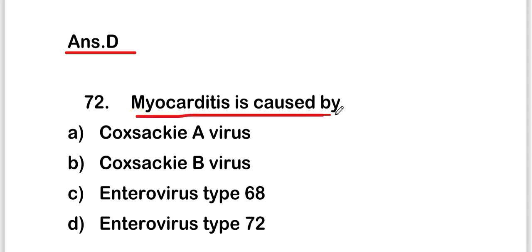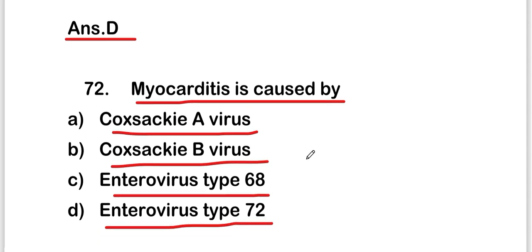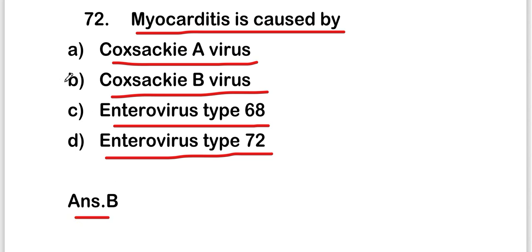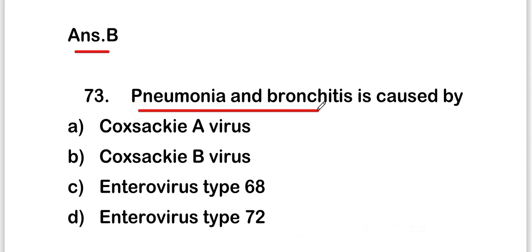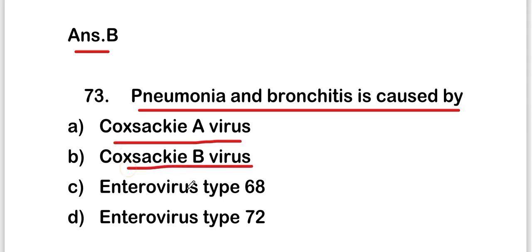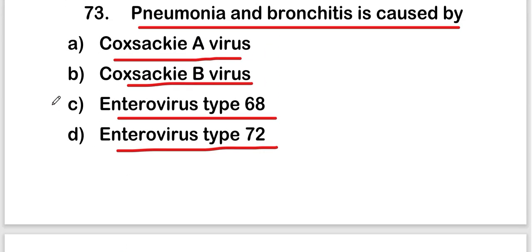The next question is: myocarditis is caused by Coxsackie A virus, Coxsackie B virus, enterovirus type 68, or enterovirus type 72. The right answer is option B — Coxsackie B virus. The following question is: pneumonia and bronchitis is caused by which of these same options. The right answer is option C — enterovirus type 68 is responsible for pneumonia and bronchitis.